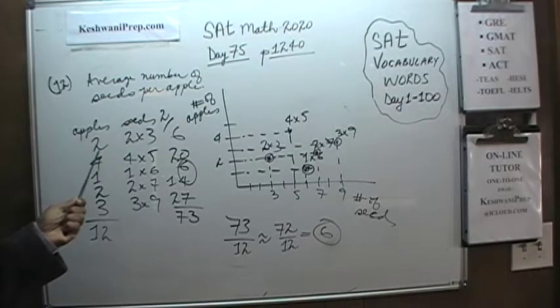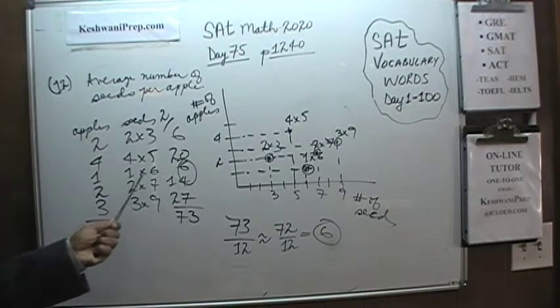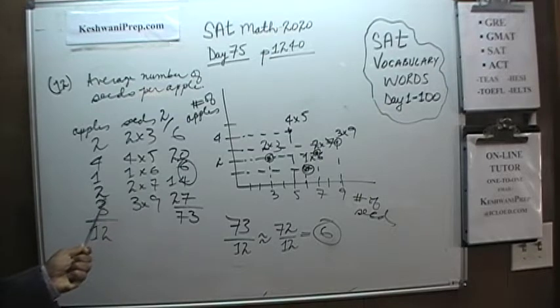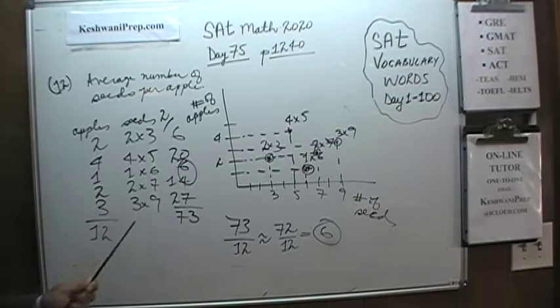To recap: we have 2 apples with 3 seeds each, 4 apples with 5 seeds each, 1 apple with 6 seeds, 2 apples with 7 seeds, and finally 3 apples with 9 seeds — based on that histogram graph.